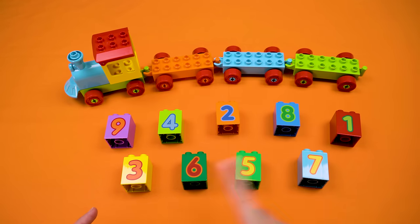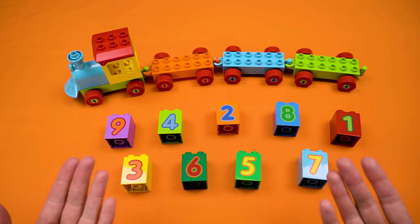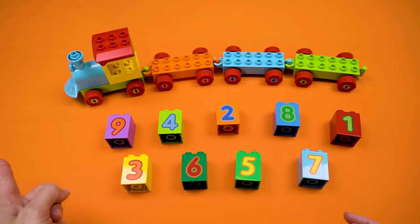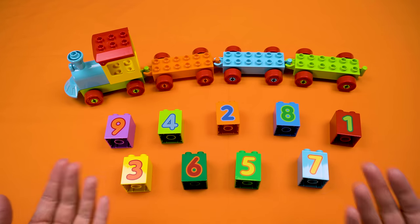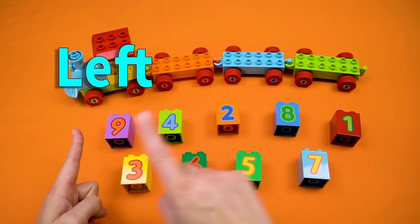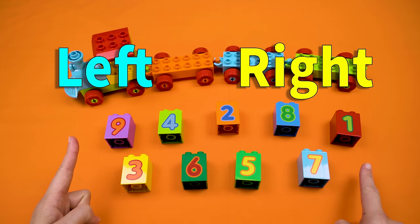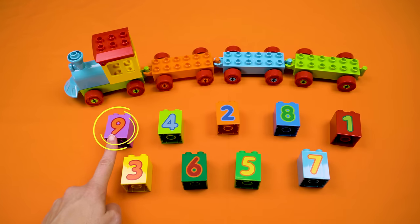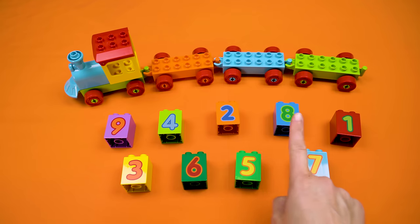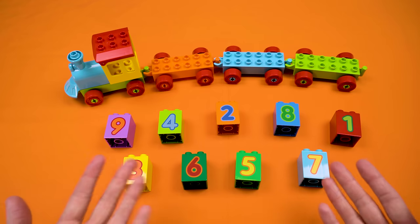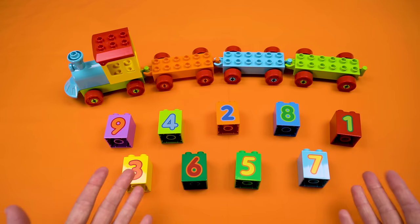Alright, friends. We need to get these numbers lined up in the correct order so that our train can go forward. Let's see what we have on the table. We're going to start on the left side and read the numbers to the right side. We'll start here with the nine, four, two, eight, one, three, six, five, and seven. Oh, wow. Those are really mixed up. They're not in the correct order at all.